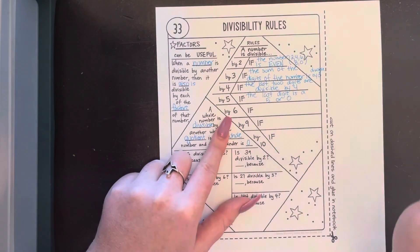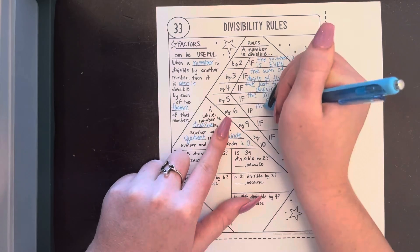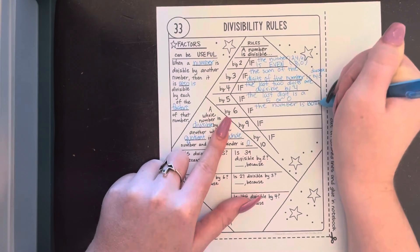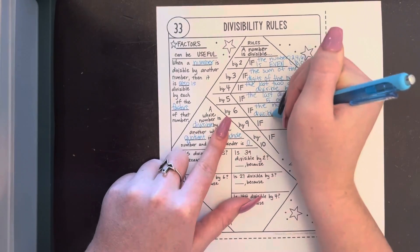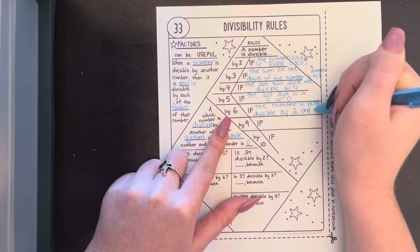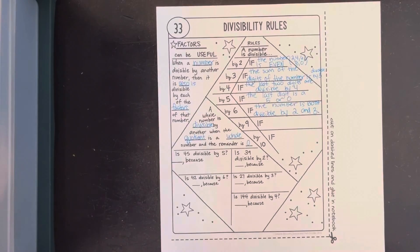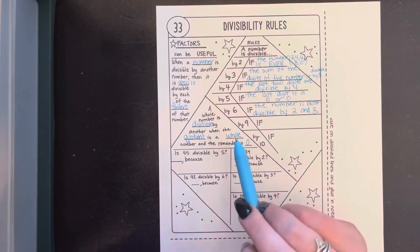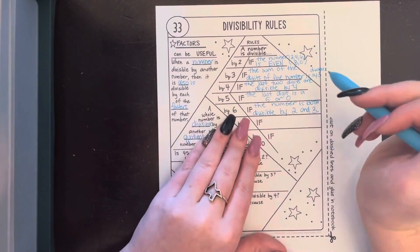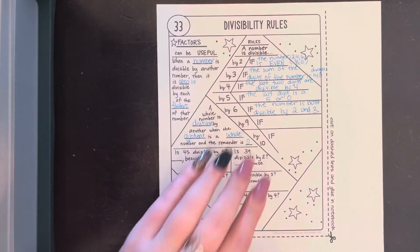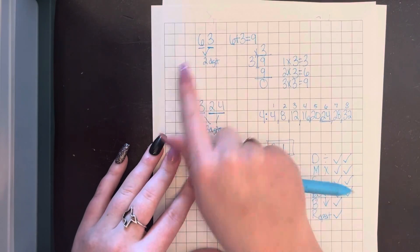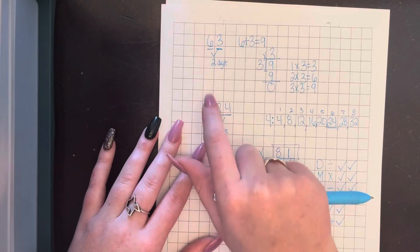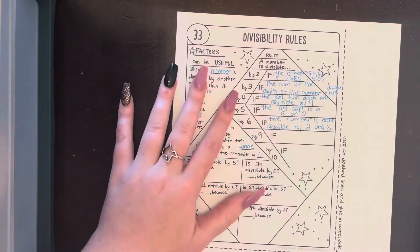A number is divisible by six if the number is divisible by both two and three. Remember, two and three are factors of six. So if a number is divisible by both 2 and 3, you don't even have to do anything extra — it's automatically divisible by 6. So if the number is even and the sum of its digits is divisible by 3, then it's divisible by 6. For example, 63 is not even, so it would not be divisible by 6.